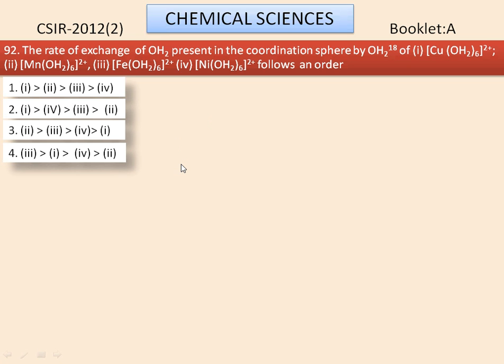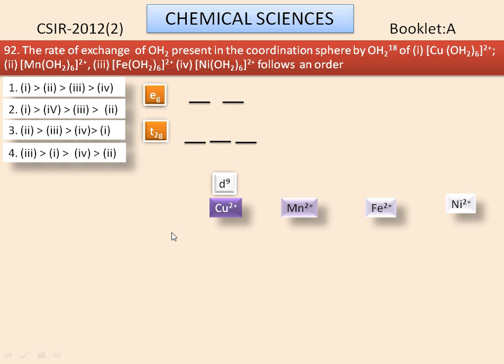The central metal ions of the complexes are here. For copper 2+, it is D9 configuration. The electrons are arranged in T2G and EG orbitals according to Hund's principle. The filling of electrons for all the complexes are shown here.